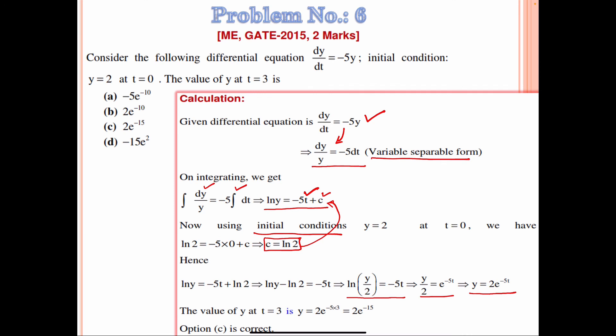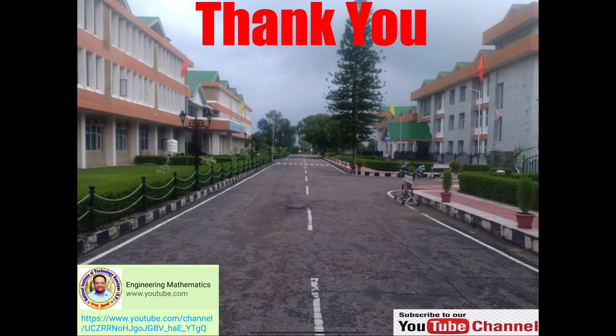The value of y at t = 3 is y = 2e^(−5×3) = 2e^(−15). So option C is correct. That's all for today. Next time we will discuss a few more problems related to ordinary differential equations. Thank you very much.